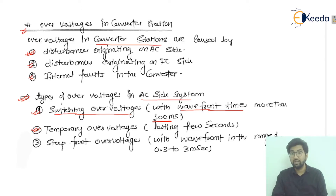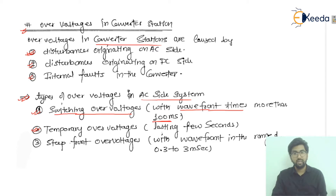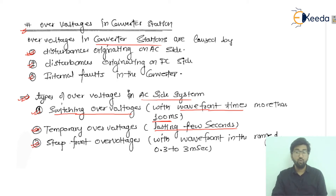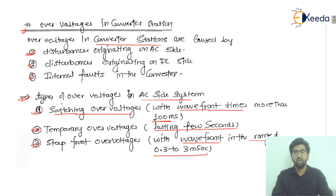The second is temporary over-voltages. These occur for a very short duration of time and then recover by themselves. These last for just a few seconds. The third is step front over-voltages, which have a wave front in the range of 0.3 to 3 milliseconds. These are all the classifications which I have discussed, and we will discuss different points in the next lectures.